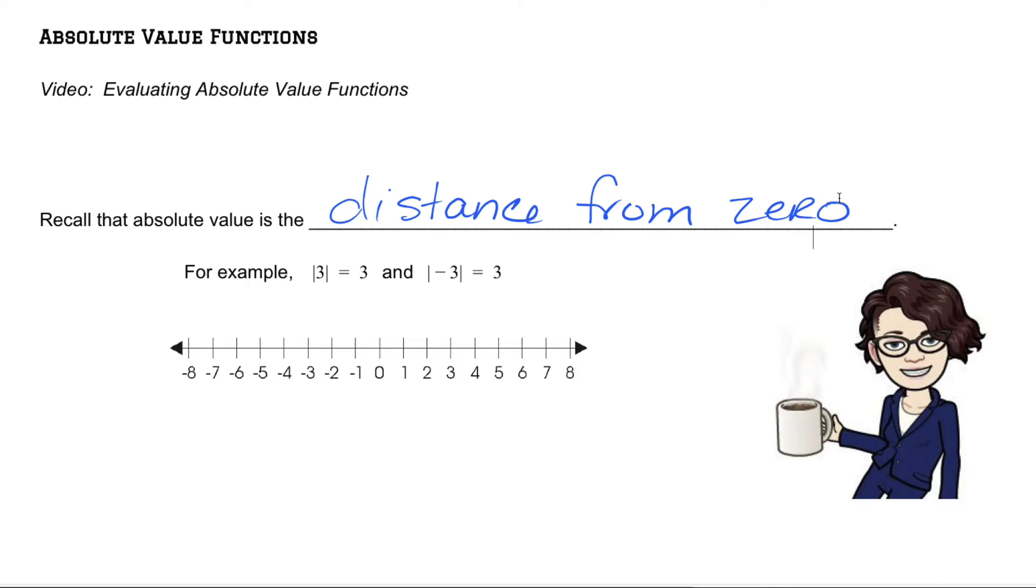So, for example, if we're thinking about the absolute value of three, here's three. How far away is three from zero? It's a distance of three from zero.